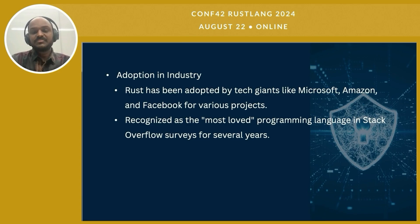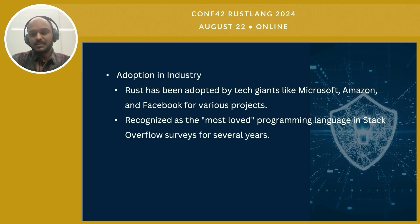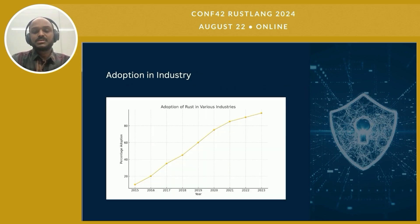Rust has seen significant adoption across the tech industry, particularly among major companies. Big names like Microsoft, Amazon, and Facebook have adopted Rust for various critical projects, leveraging its safety and performance benefits. In addition to industrial adoption, Rust has been consistently recognized as the most loved programming language in Stack Overflow surveys for several years, reflecting its strong community support and developer satisfaction. This illustrates the steady increase in Rust adoption from 2015 to 2023, with significant growth especially after 2017, reflecting Rust's growing reputation for safety, performance, and concurrency, and highlighting how it has become a preferred choice for companies requiring reliable, efficient, and secure system-level programming.